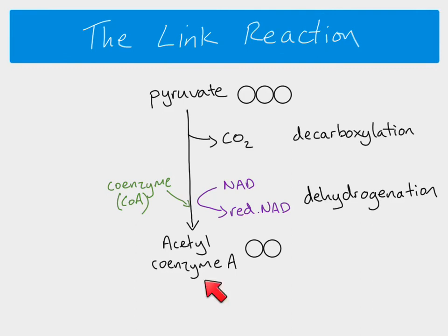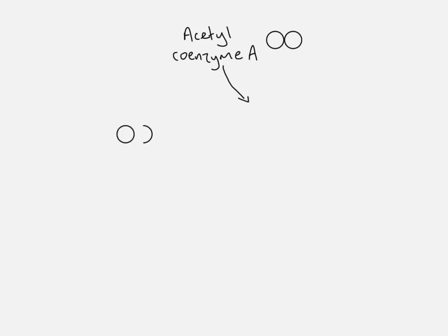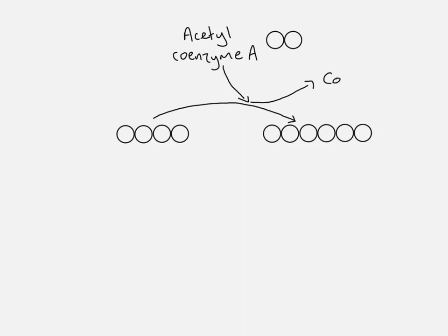Acetyl coenzyme A now goes through to the Krebs cycle. Our two carbon acetyl coenzyme A combines with a four carbon molecule to make a six carbon molecule. When that happens, coenzyme A gets regenerated and is able to go back to the link reaction so that we're always making more acetyl coenzyme A and the cycle can continue. The acetyl group is the two carbon part of the molecule that combines with the four carbon to make the six carbon.